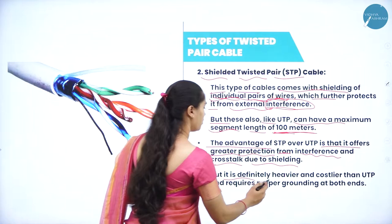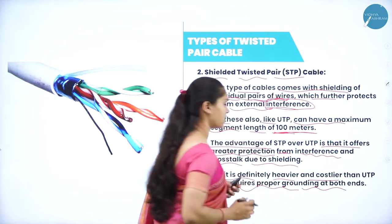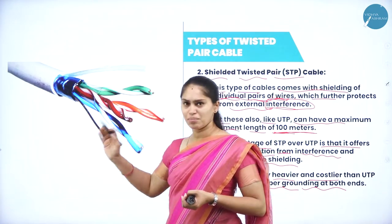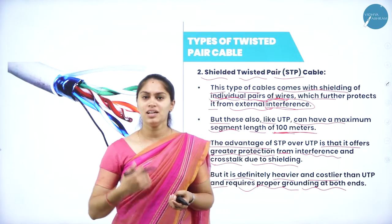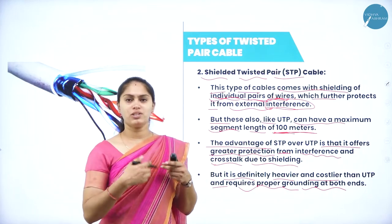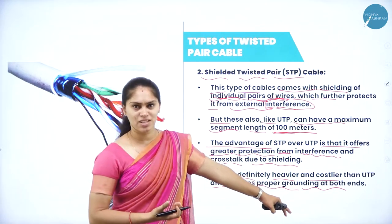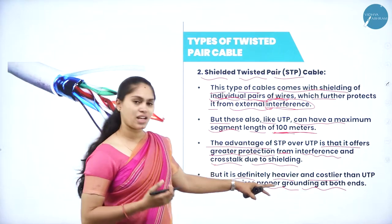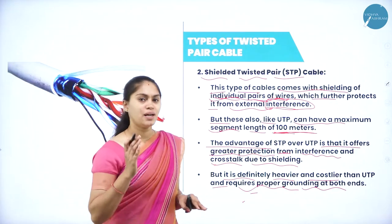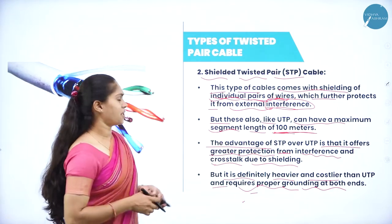For example, crosstalk is when your call gets connected with another person — STP avoids this through shielding. However, STP is heavier and costlier than UTP and requires proper grounding at both ends — from sender to receiver.